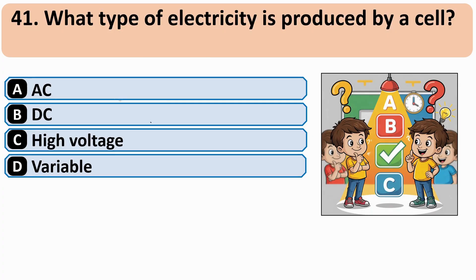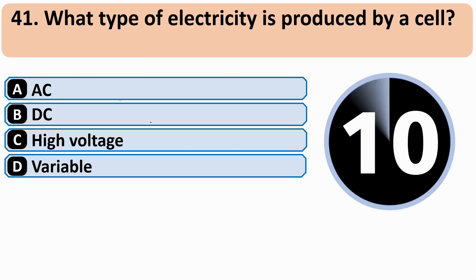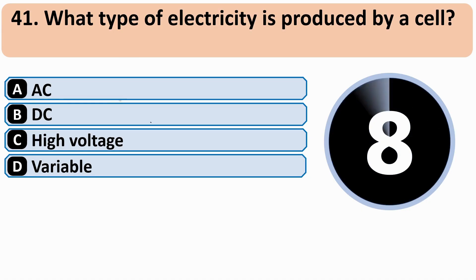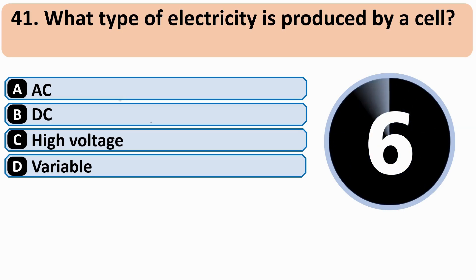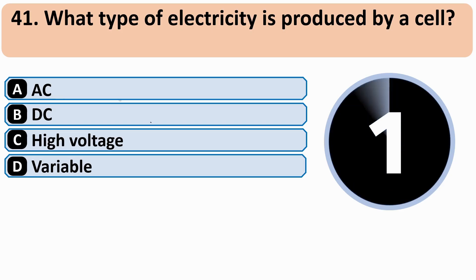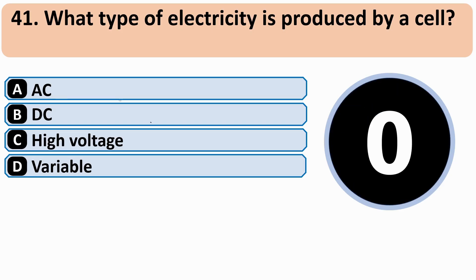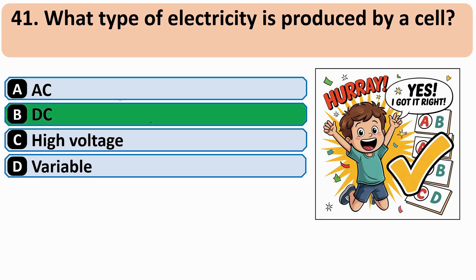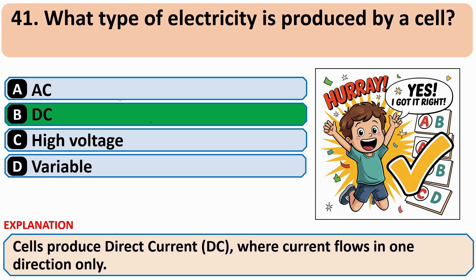What type of electricity is produced by a cell? The correct answer is B: DC (Direct Current).